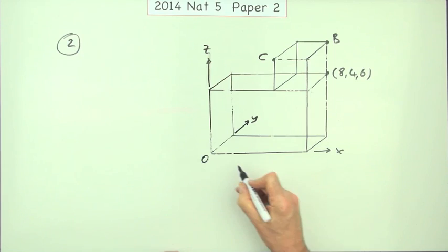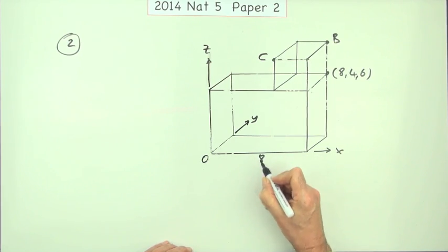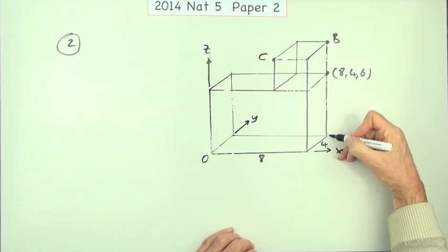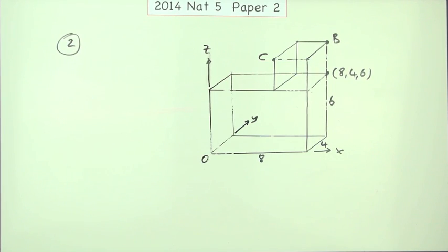So if that's (8, 4, 6) that must mean you go along 8 so that side's 8. You then go back 4 so that side's 4, and then you go up 6 so that side's 6.